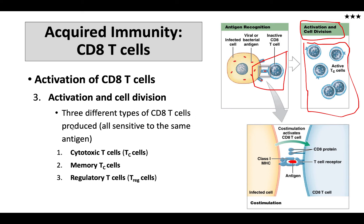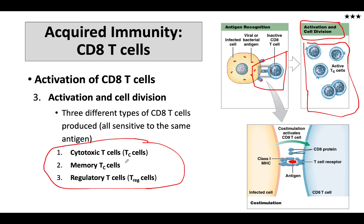This clonal expansion process produces all three types of CD8 cells: the cytotoxic and the regulatory cells, which we already mentioned, but also memory T cells. Cytotoxic cells are going to go on to kill — hence the name cytotoxic. Their job is to go and kill anything that is infected with the virus or bacteria that produces this antigen.